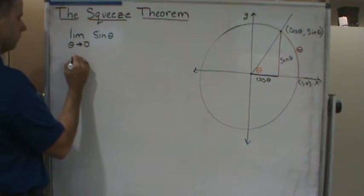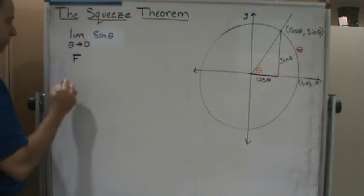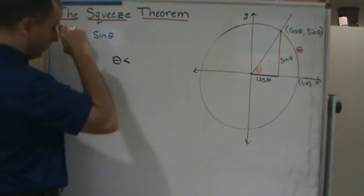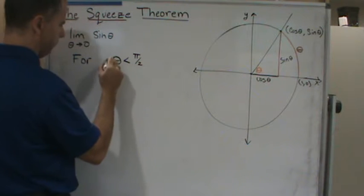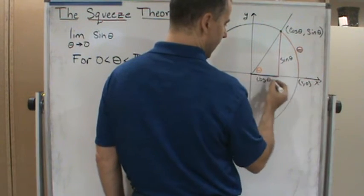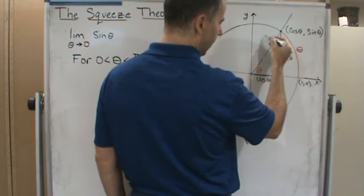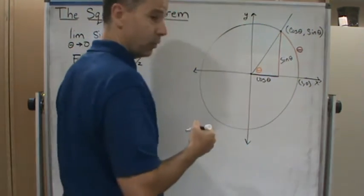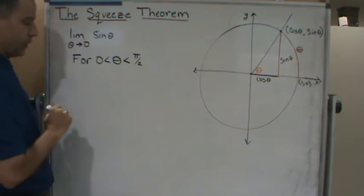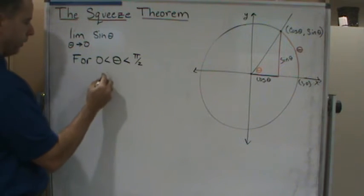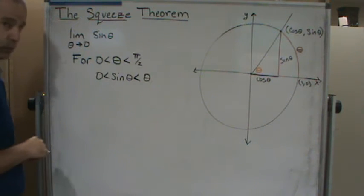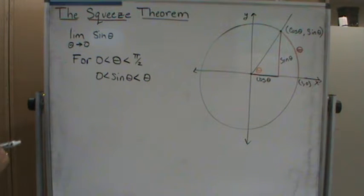So for theta between zero and pi over two, I want to look at what is happening to sine theta as theta approaches zero from the right. We know sine theta is between zero and theta in this quadrant, and now by the squeeze theorem we can draw a conclusion.